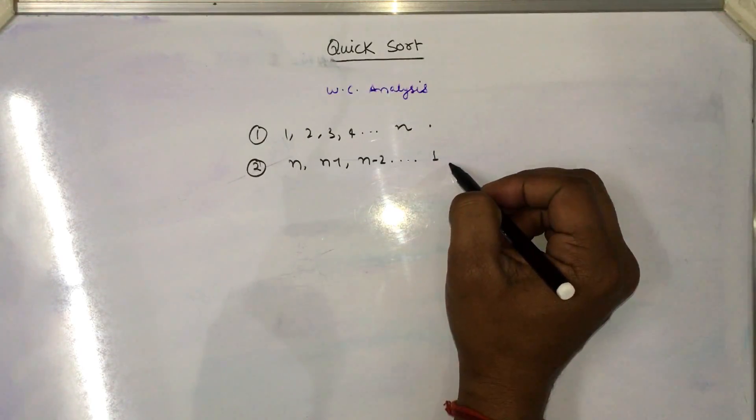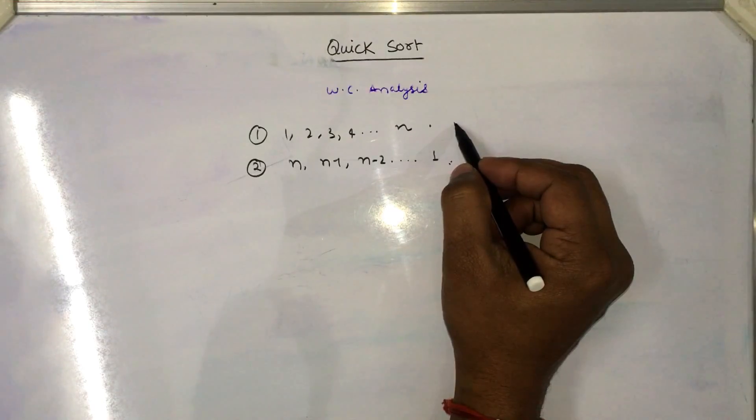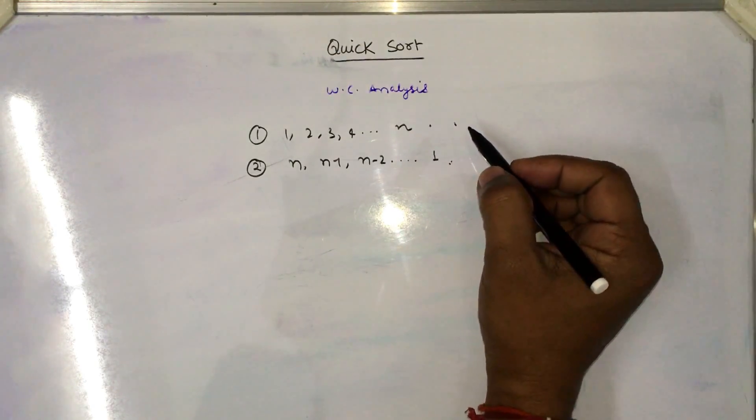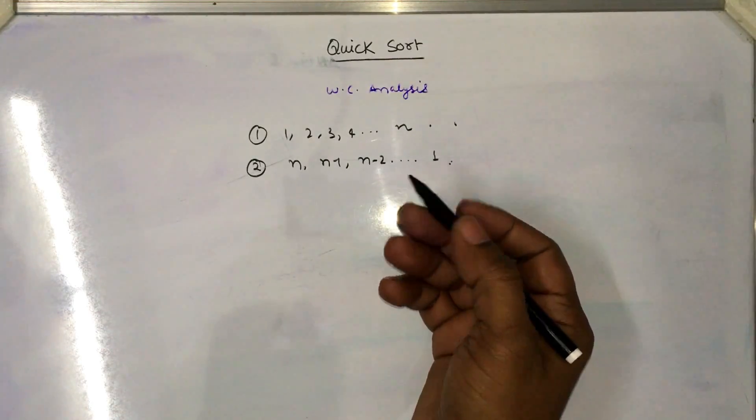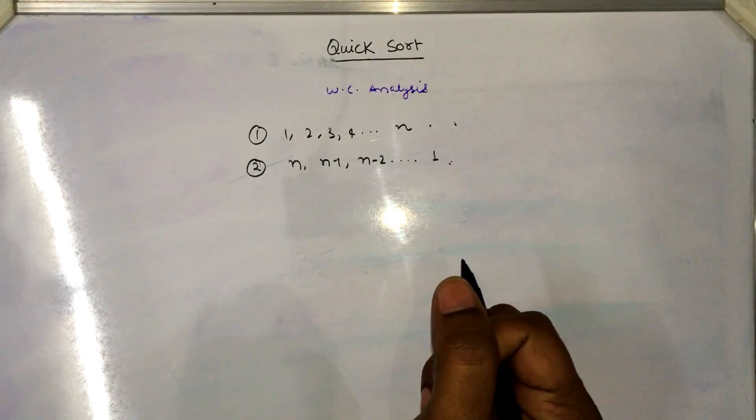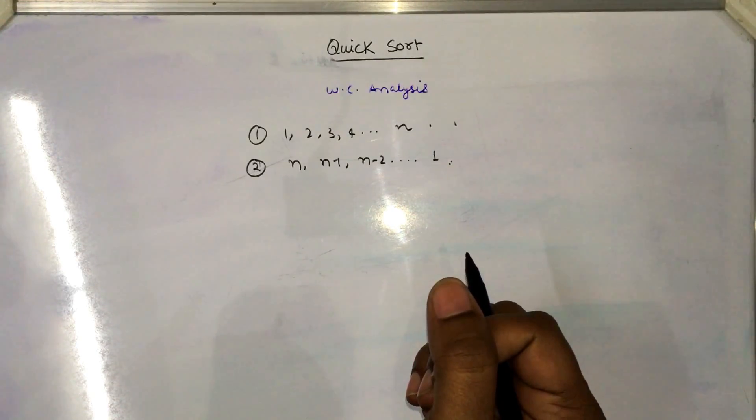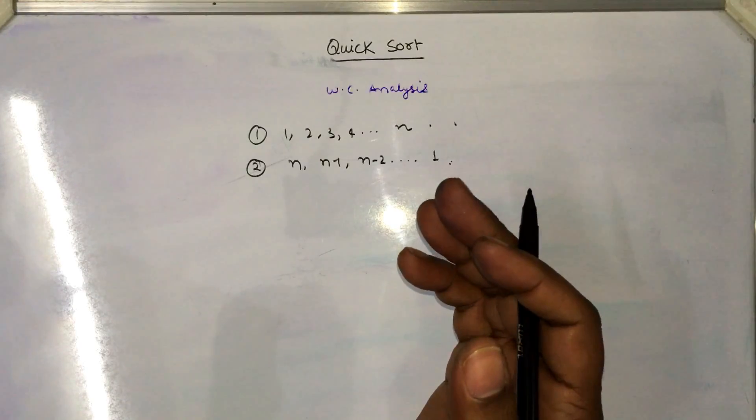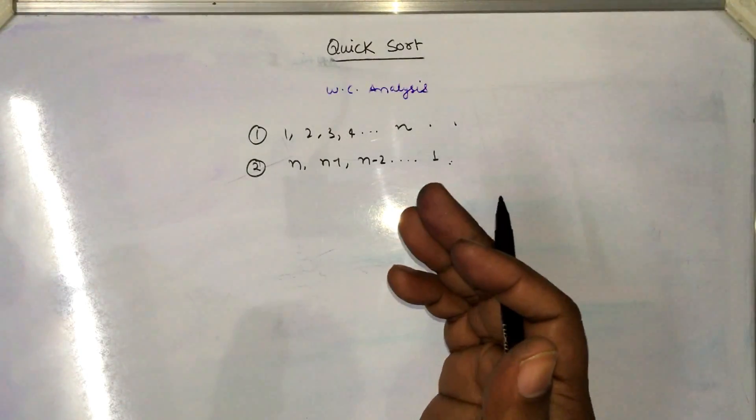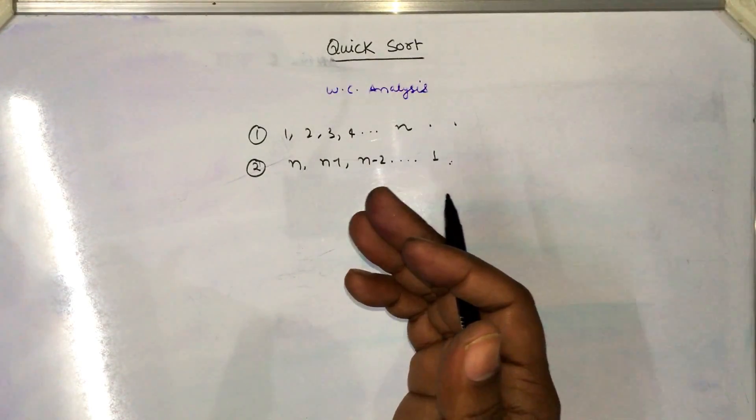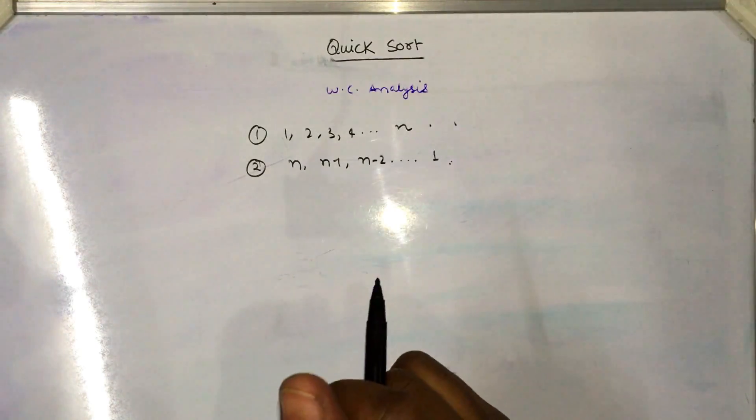In both of the cases, the time complexity or the recursive partition algorithm is when we apply the partition algorithm, then it will divide the problem into two parts: one is having the elements n-1 and another is having the pivot element or one element.